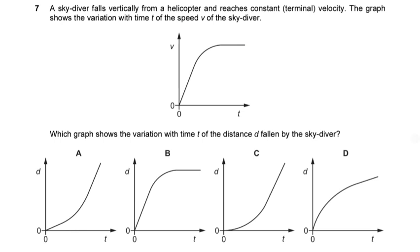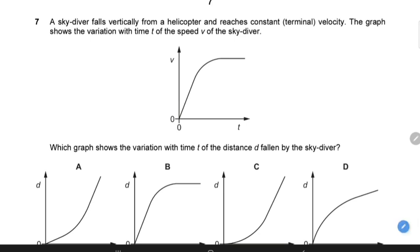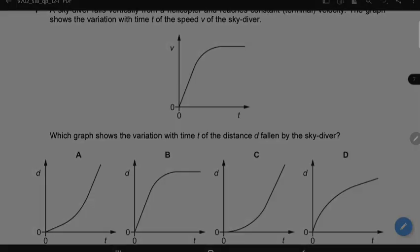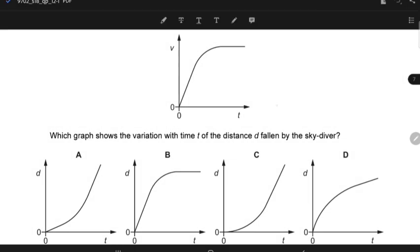A skydiver falls vertically from a helicopter and reaches a constant terminal velocity. The graph shows the variation with time of the speed of the skydiver. This is the graph of speed with respect to time. This graph shows the variation with time t of the distance d fallen by the skydiver. In such questions, you should consider that you have been given a velocity-time graph.